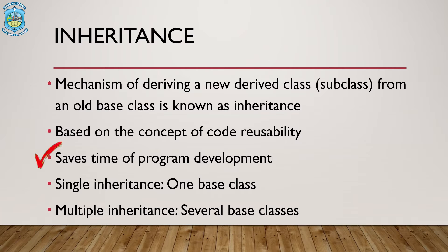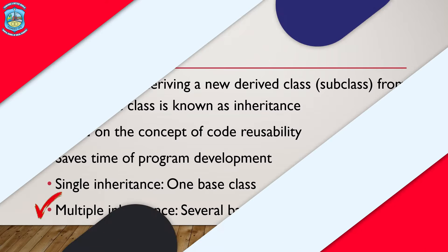Inheritance is based on the concept of code reusability. It basically saves a lot of programming time. We would have many types of inheritance. For example, a single inheritance will have a base class which is single, and in multiple inheritance we would have several base classes. Apart from single and multiple inheritance, there are many other types. Let us see what are the various types of inheritances that we can implement in C++ programming.